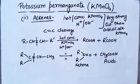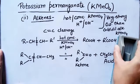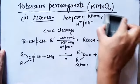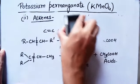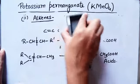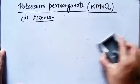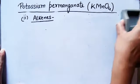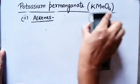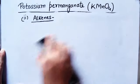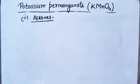So these were the reactions of alkenes with cold and hot concentrated KMnO₄. In cold KMnO₄, we saw diols were formed, and in hot concentrated KMnO₄, carbonyl compounds are formed — either a ketone or a carboxylic acid.